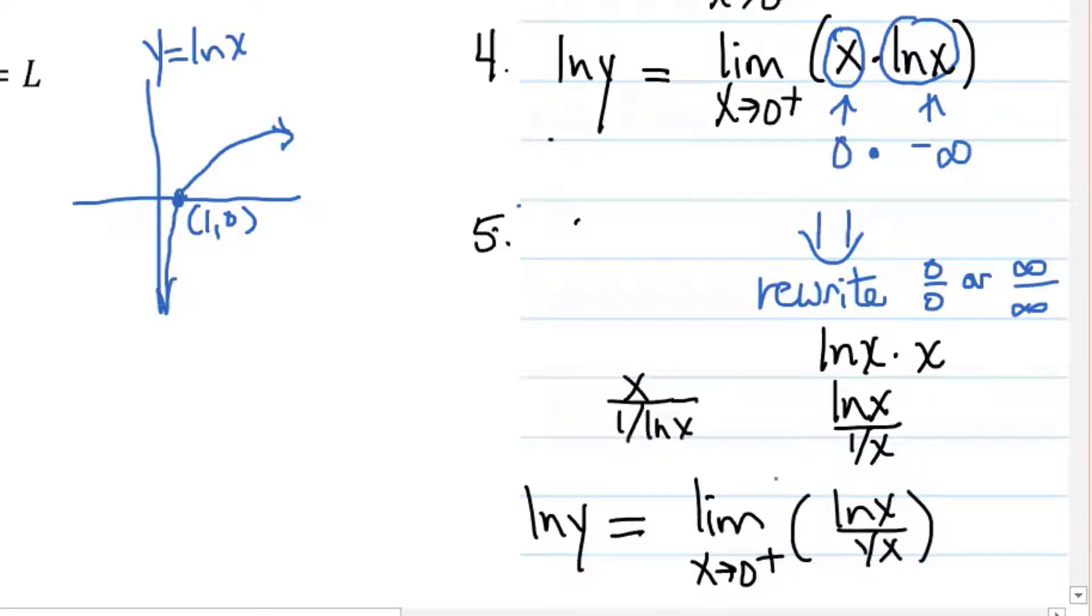We're going to say the natural log of y equals the limit as x approaches zero from the right of natural log of x divided by one over x. By the way, we could also have done x divided by one over the natural log of x. However, in the next step when we apply L'Hôpital's rule, we have to take the derivative and which derivative is easier to take: one over x or one over the natural log? One over x.